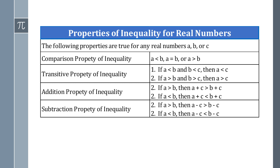The addition property: if A is greater than B, then A plus C is greater than B plus C; if A is less than B, then A plus C is less than B plus C. The subtraction property: if A is greater than B, then A minus C is greater than B minus C; if A is less than B, then A minus C is less than B minus C.